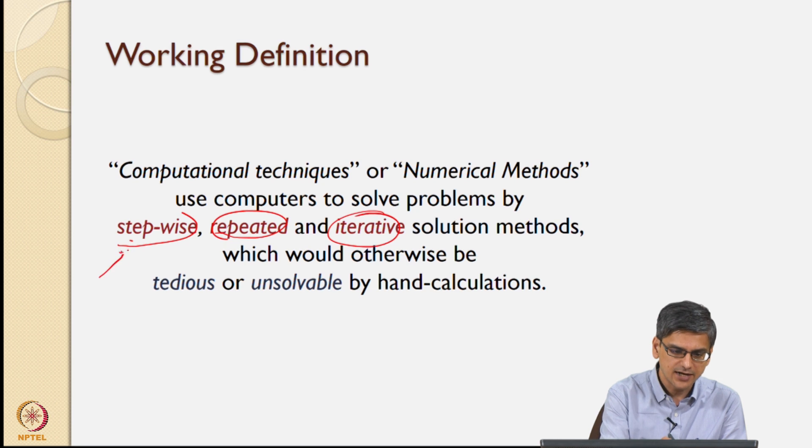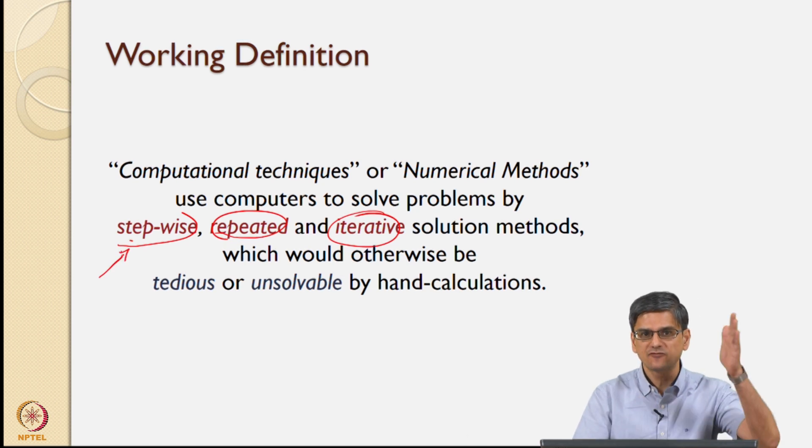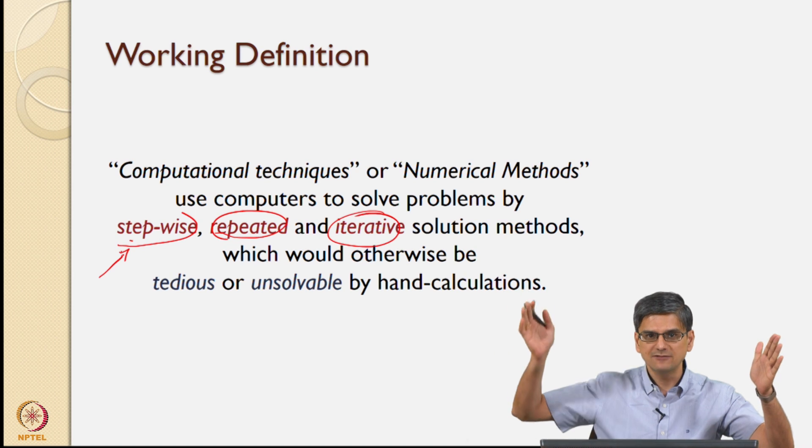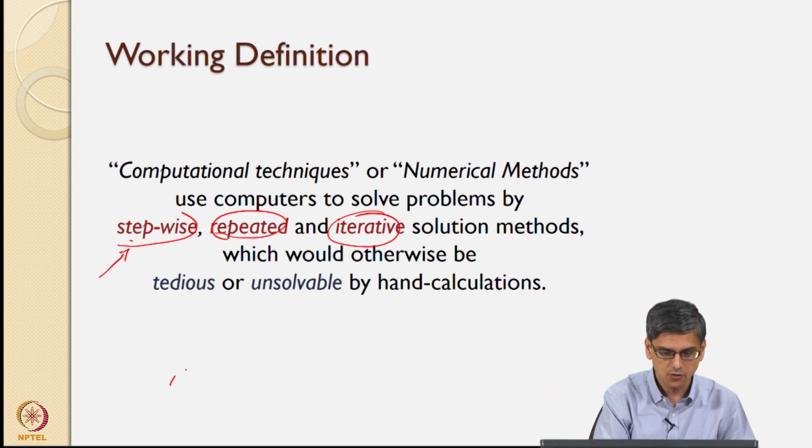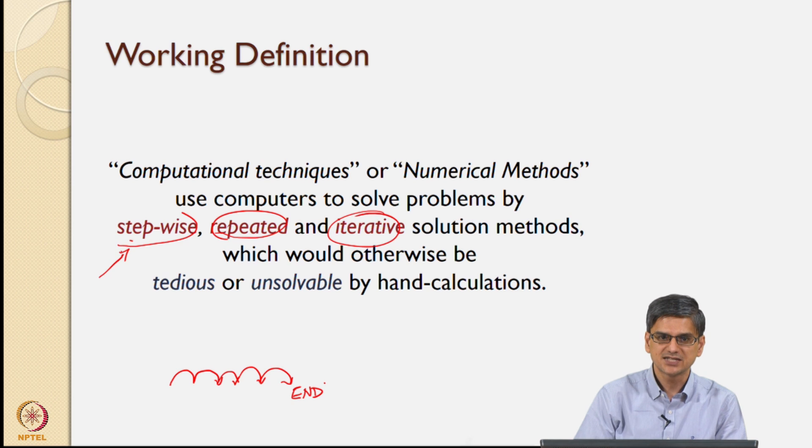On the other hand, what we mean by stepwise is you start from one starting point and you have certain other end point to reach to. And you go from that starting point to the next point, then to the next point, then to the next point in step by step manner, till you finally reach the end point. This is what would be meant by a stepwise procedure.